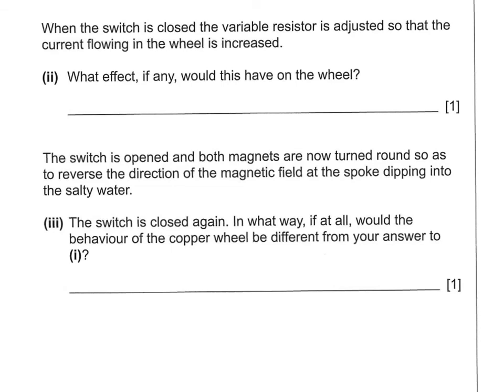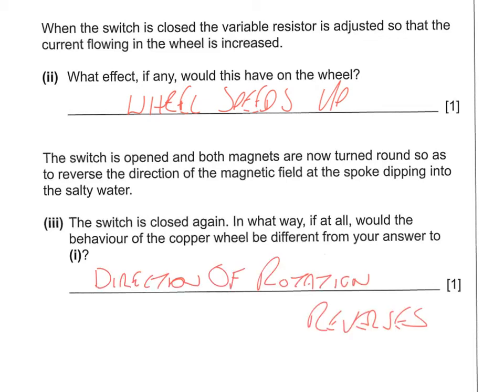When the variable resistor is adjusted to increase the current, the force on the wheel increases, so the speed of rotation increases. When the switch is opened and both magnets are reversed to reverse the magnetic field, then the switch is closed again — reversing the magnetic field reverses the direction of the force, so the copper wheel rotates in the opposite direction.